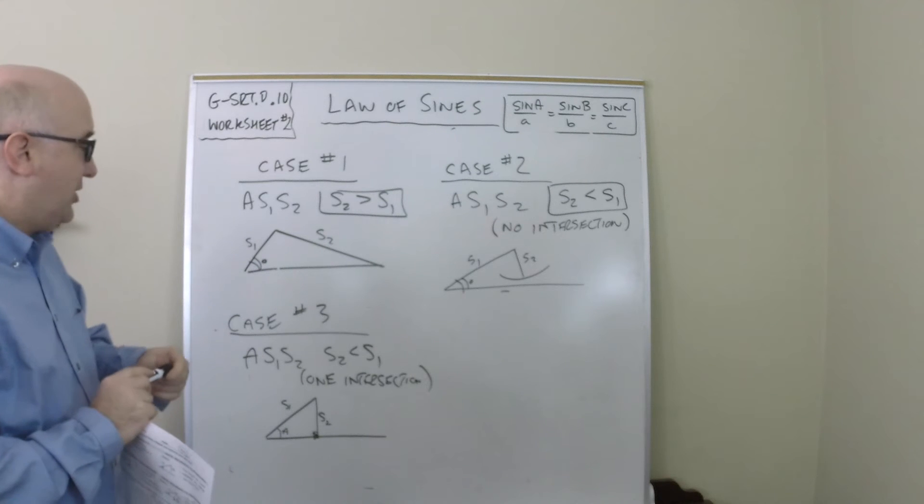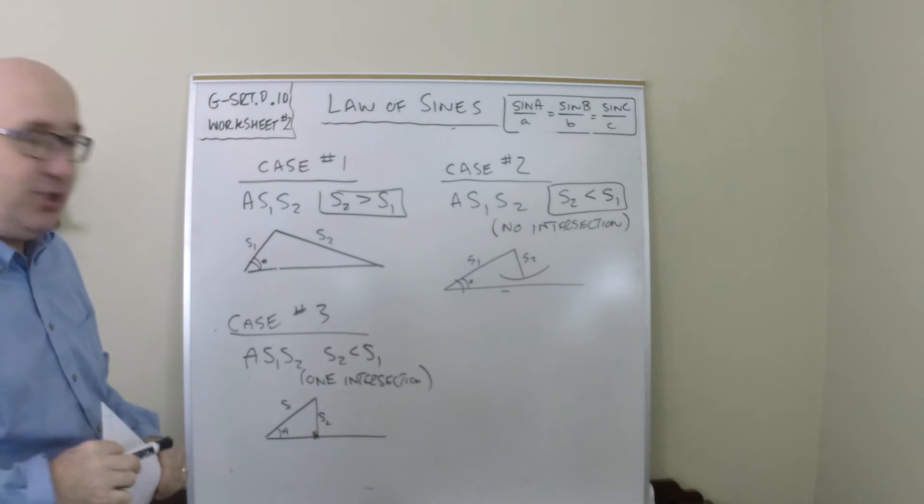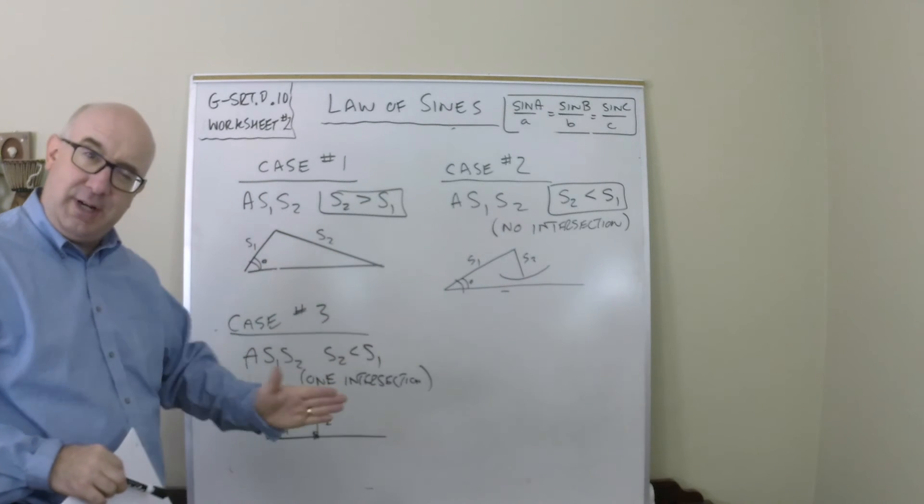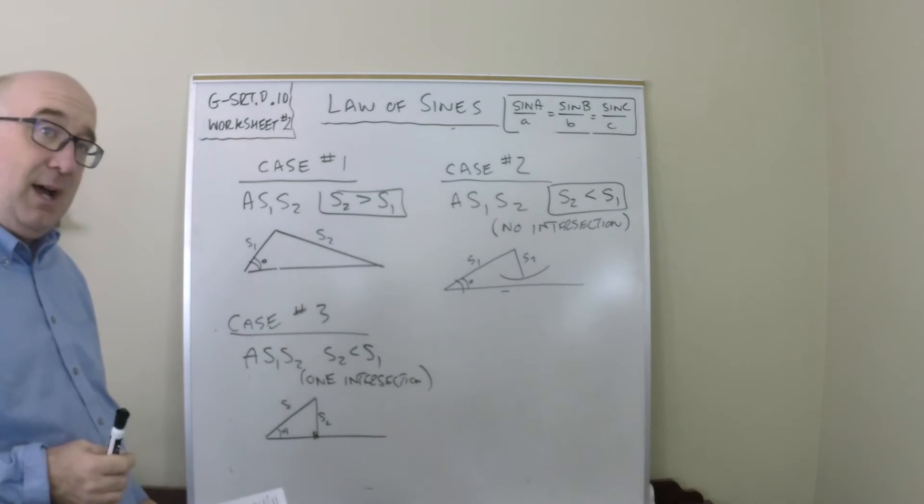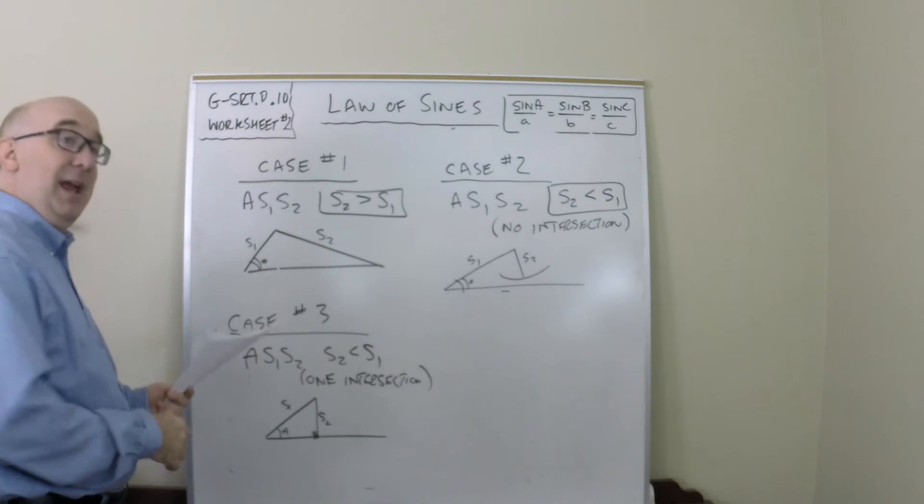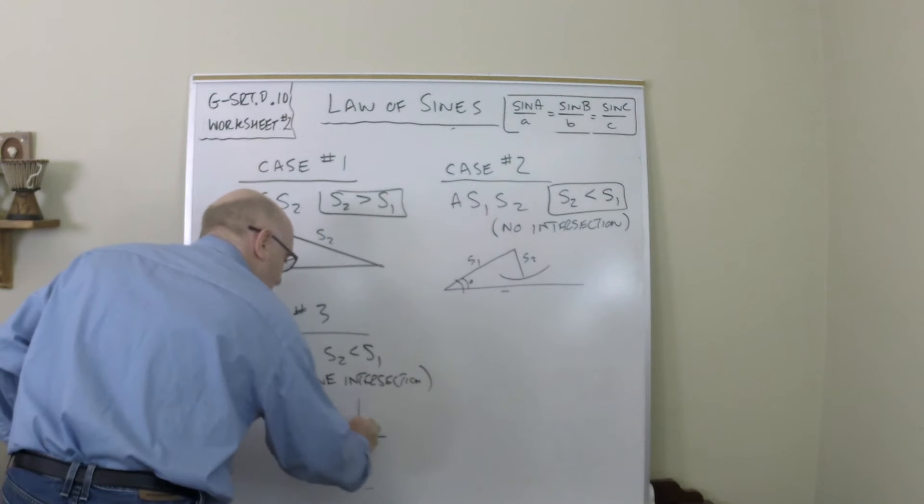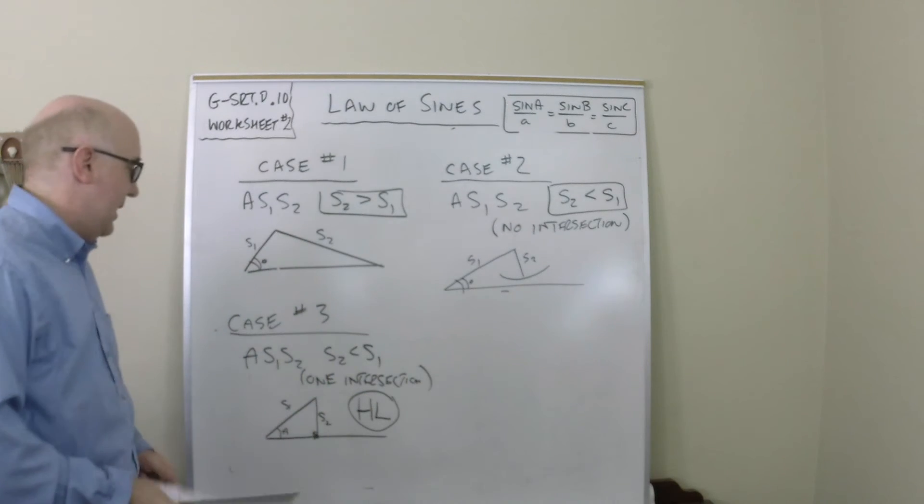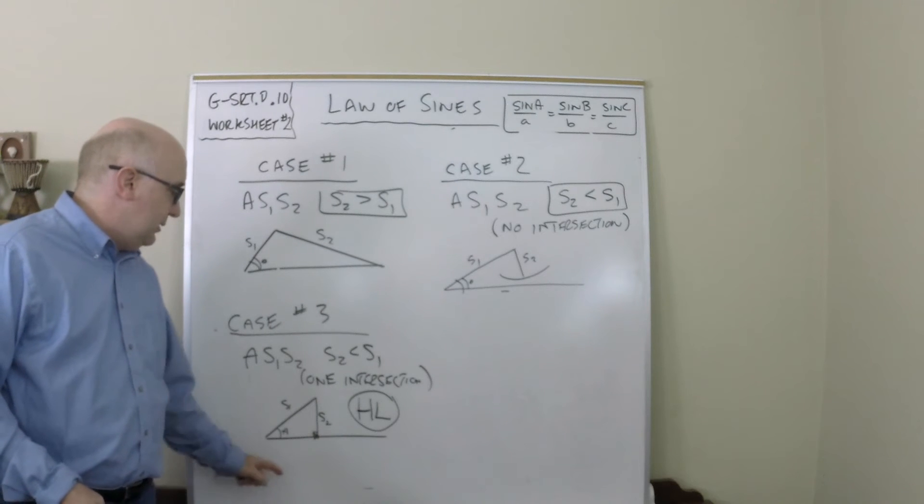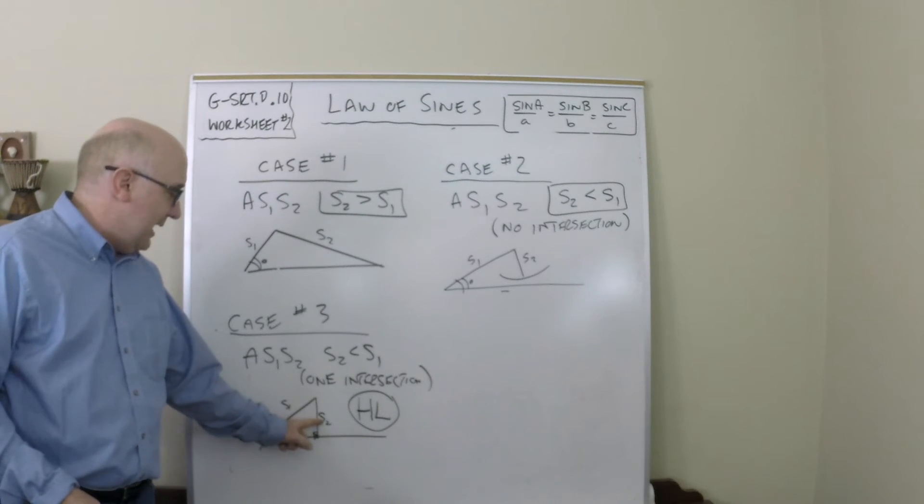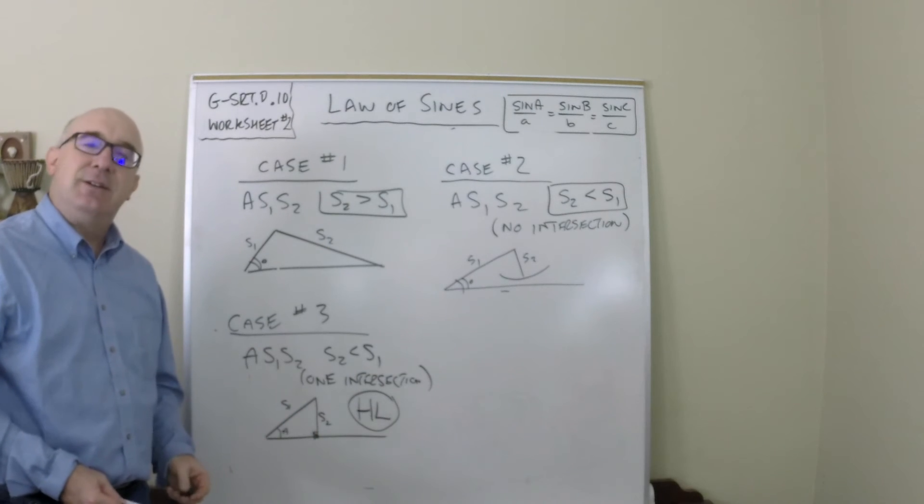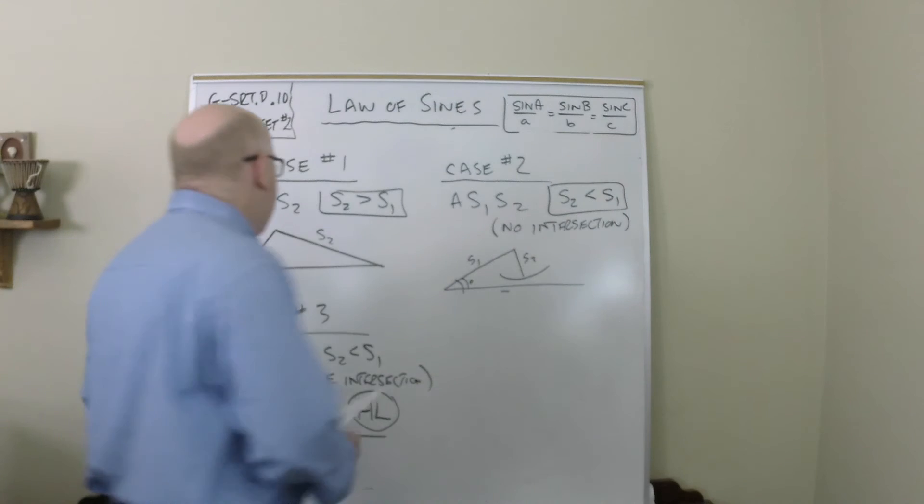Now this, actually, is a congruence relationship. When it intersects exactly once, perpendicularly, it creates an identical triangle every time under those conditions. And actually, we call this one HL, which you've probably already heard about, which is to have a hypotenuse and a leg of a right triangle guarantees congruence.